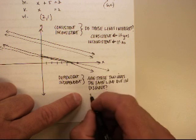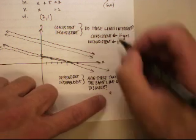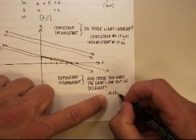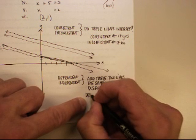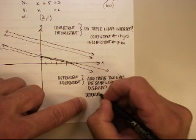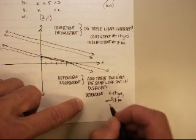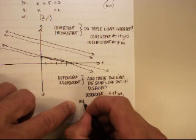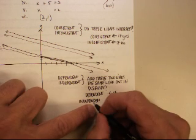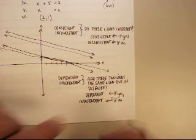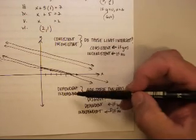So if the answer is yes, these are the same line. These are called dependent. The lines are dependent on each other. They're the same line. If the answer is no, then they're independent lines. And that makes sense, right? Independent means that they're different from one another.